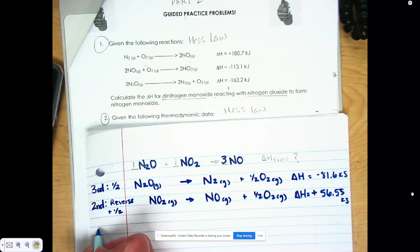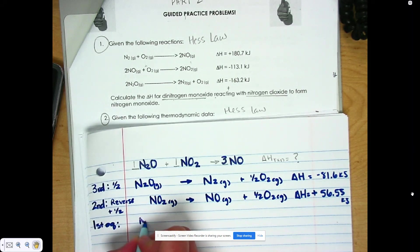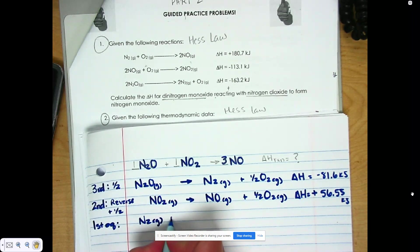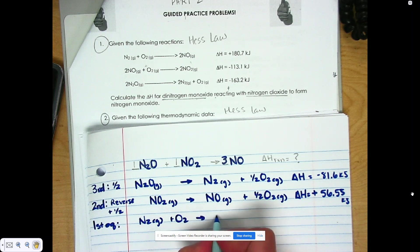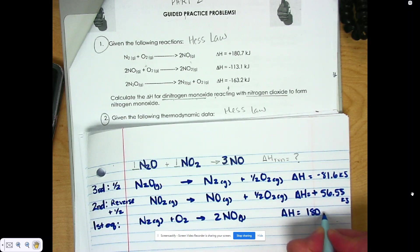So my first equation, I'm going to leave as is, which is N2 plus O2 gives me 2NO. And therefore, my delta H is equal to a positive 180.7 kilojoules.